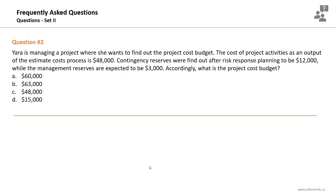Question number two. Yara is managing a project where she wants to find out the project cost budget. The cost of project activities as an output of the estimate costs process is $48,000 USD. Contingency reserves found after risk response planning are $12,000 USD, while the management reserves are expected to be $3,000 USD. What is the project cost budget?